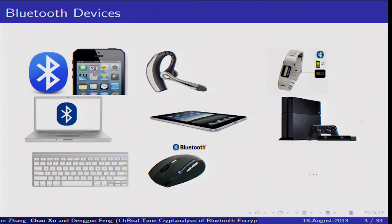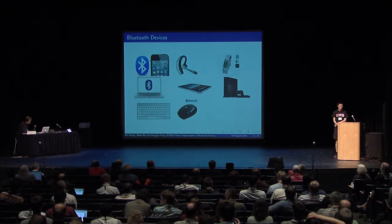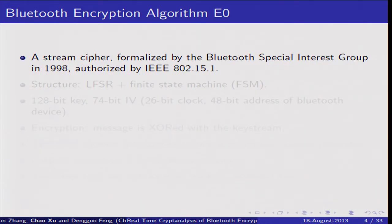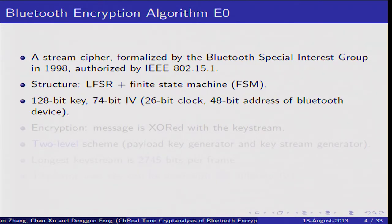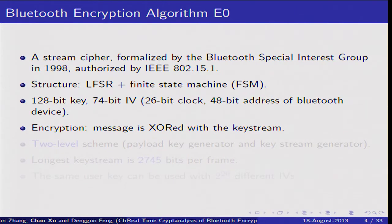Let's start with some Bluetooth devices. Bluetooth devices are almost everywhere in our daily life, such as telephones, laptop computers, keyboards, and so on. So we can see that the security analysis of Bluetooth is still very important. Bluetooth uses E0 to protect privacy. E0 is a stream cipher formalized by the Bluetooth Special Interest Group in 1998. It consists of LFSR and a finite state machine. It has a 128-bit key and 74-bit IV. During encryption, the message is XORed with a key stream.